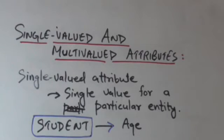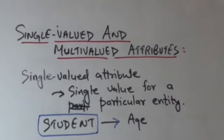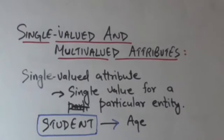Next is single-valued and multivalued attributes. Those attributes which have a single value for a particular entity are called single-valued. For example, age attribute of a student entity.